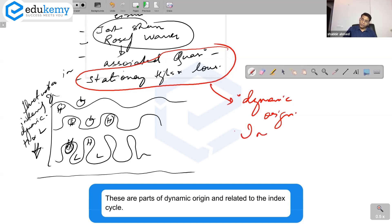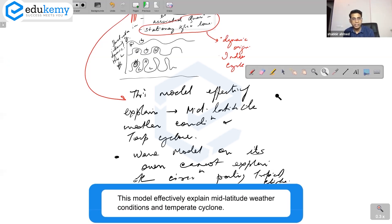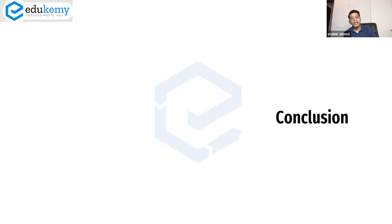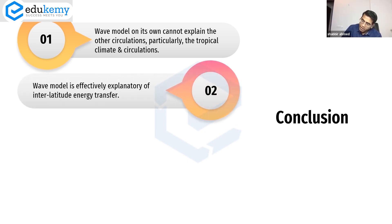These are of dynamic origin and related to the index cycle. This model effectively explains mid-latitude weather conditions and temperate cyclones. But wave model on its own cannot explain the other circulations, in particular the tropical circulations and the tropical climate.